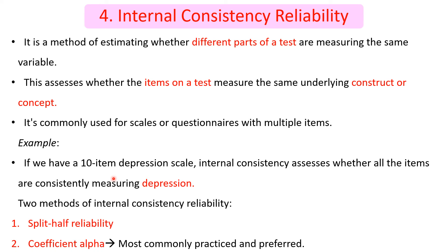There are two methods to find out internal consistency reliability. The first is split-half reliability and the second is coefficient alpha, which is the most common practice and the preferred one in the research community.